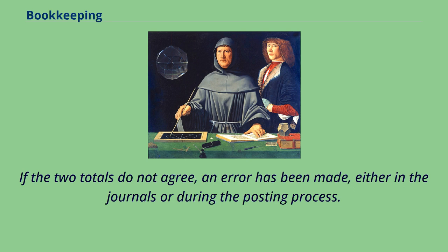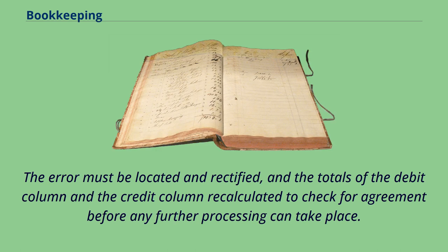If the two totals do not agree, an error has been made, either in the journals or during the posting process. The error must be located and rectified, and the totals of the debit column and the credit column recalculated to check for agreement before any further processing can take place.